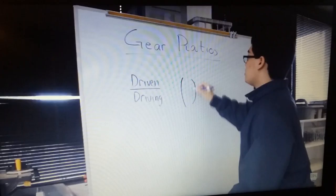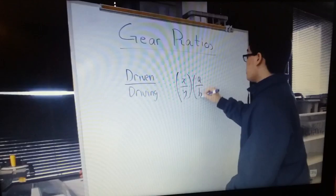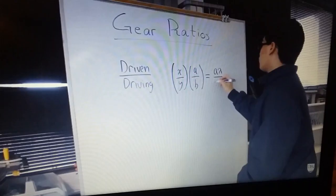So if your first gear ratio is X over Y, and your second gear ratio is A over B, then your final gear ratio will be AX over BY.